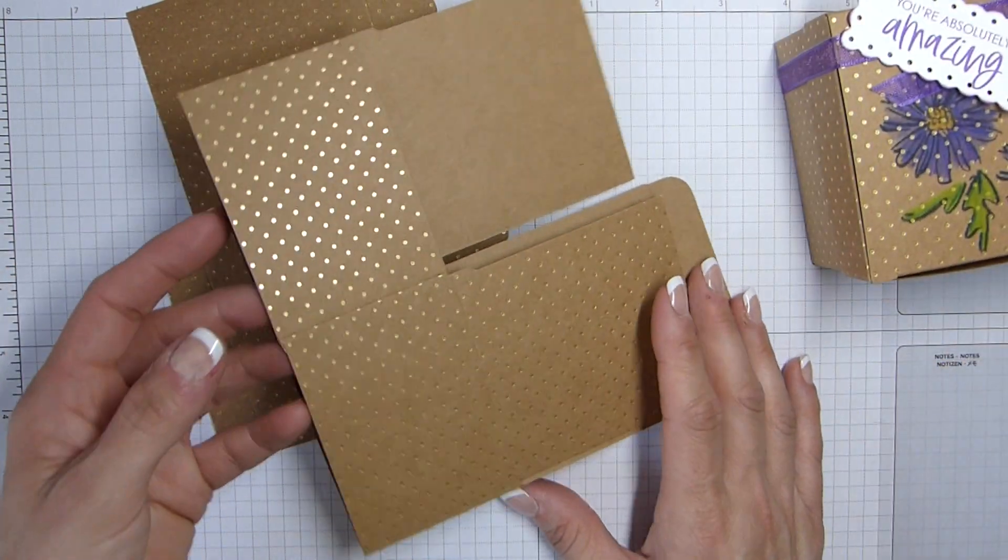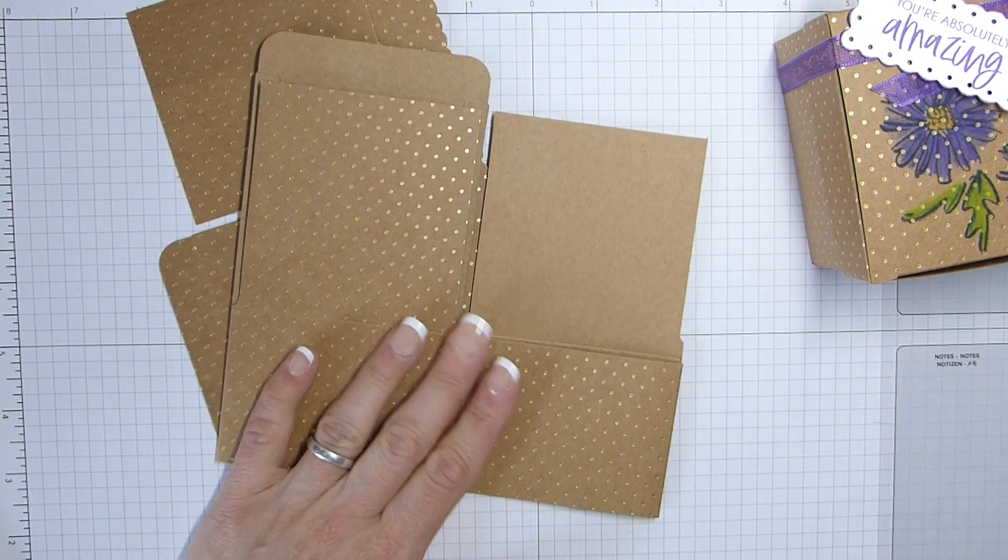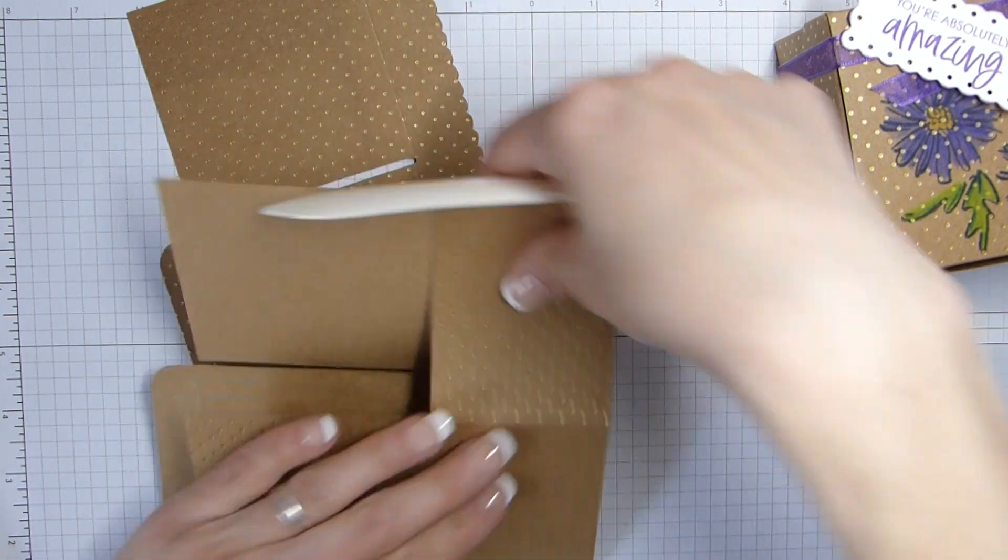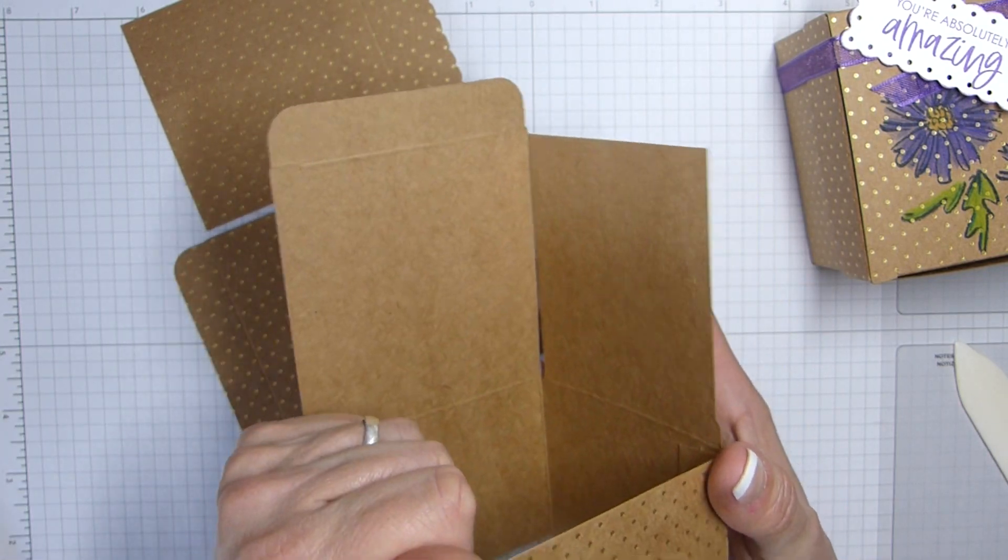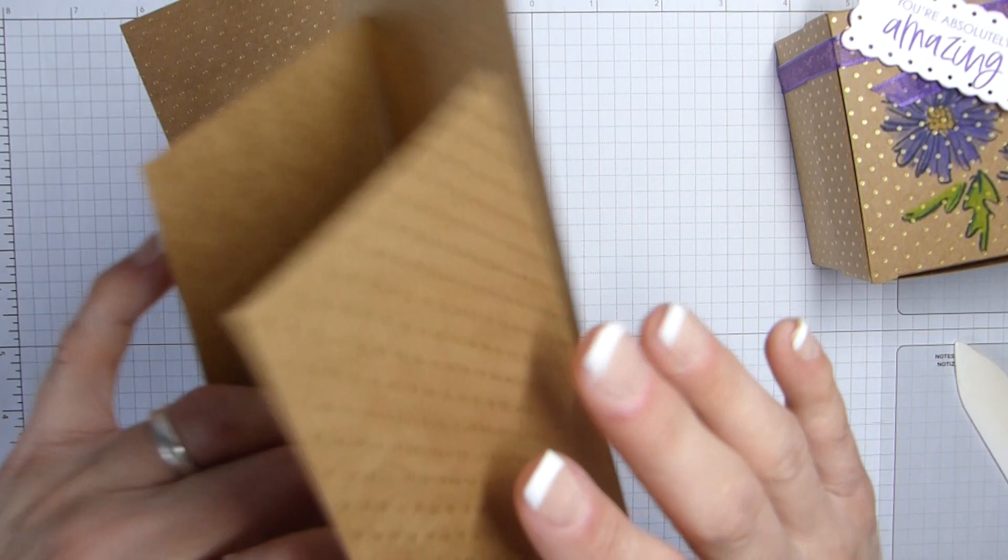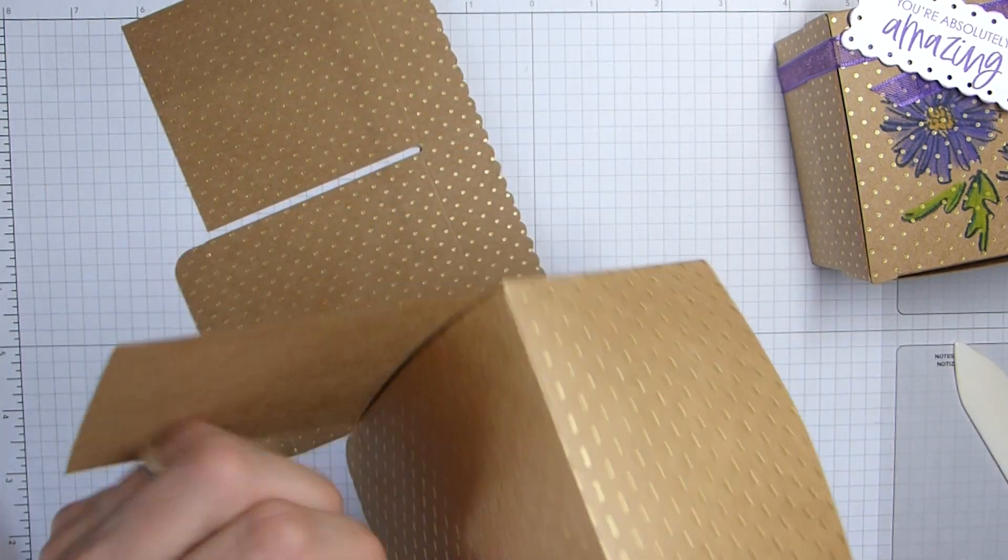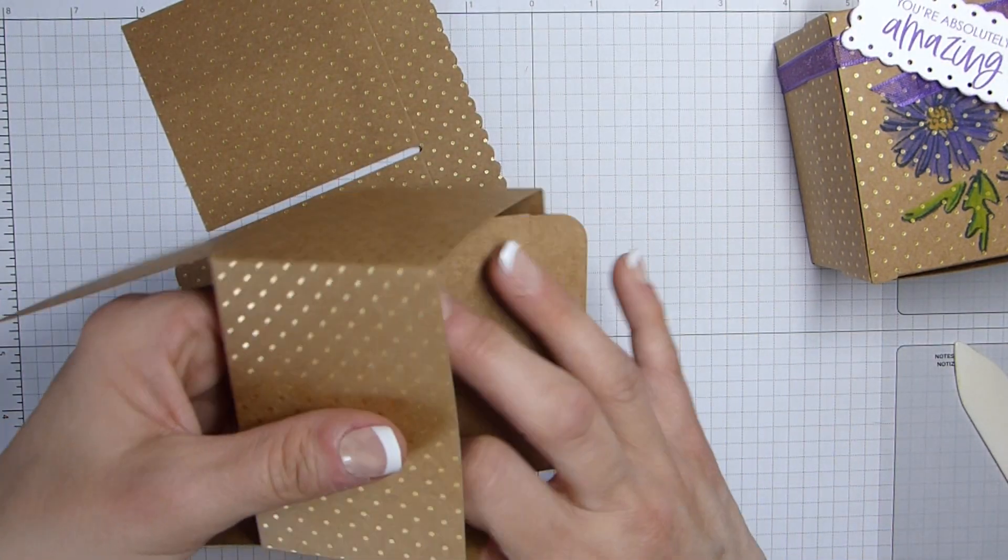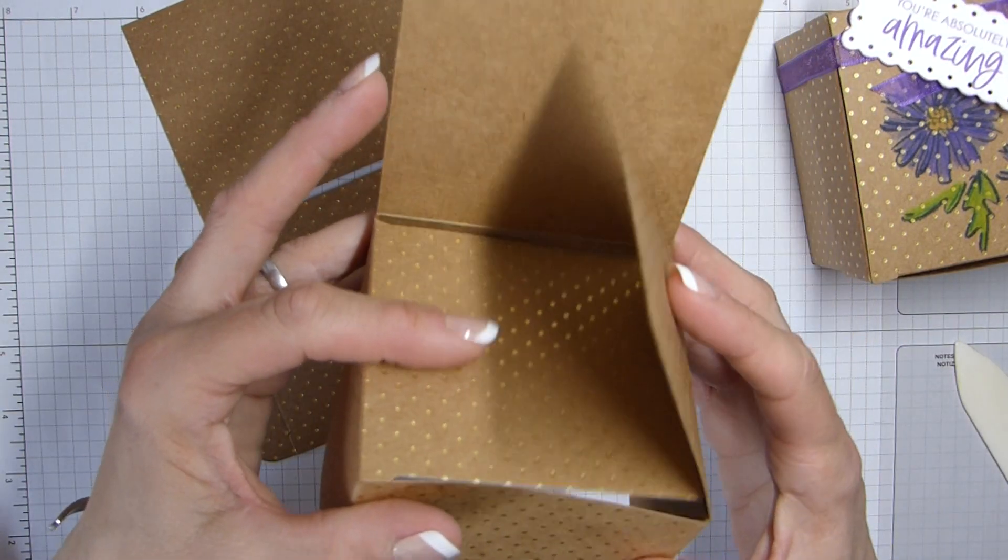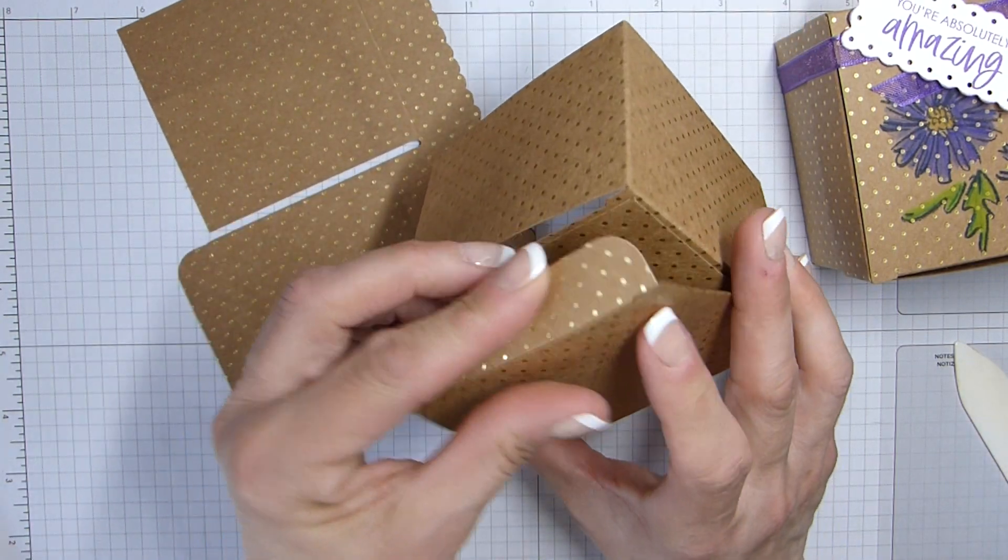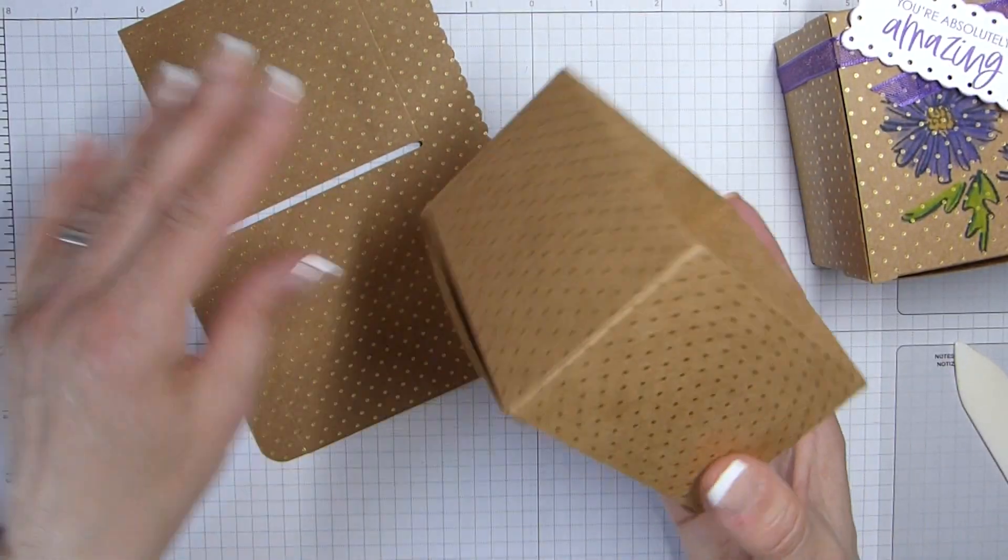So I'm just going to quickly make this one up for you. Fold it the opposite way. If you want to get that bone folder in there, you can. And then I folded these in and then brought them back out just to reinforce that fold. Gorgeous gold spots on. And then we're just going to fold the bottom up. And it's just as simple as that. So that is your little box base.